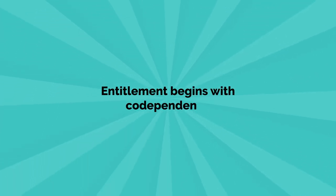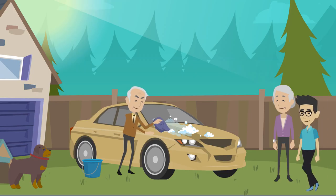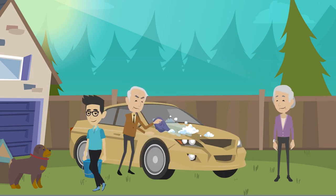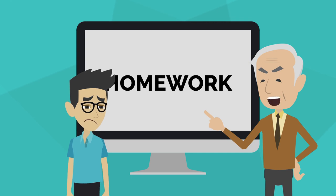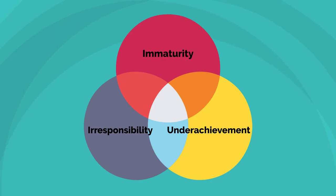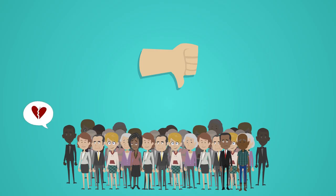Entitlement begins with codependence. Codependence very much describes the reality of the relationship many current-day parents have with their children. It describes a dysfunctional helping relationship where one person supports or enables another person's immaturity, irresponsibility, or underachievement.